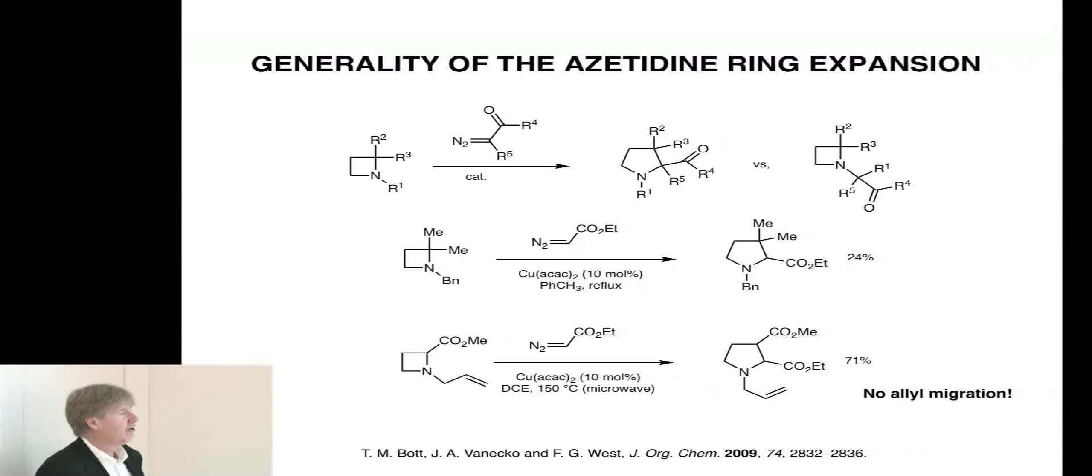Now, here, we've completely taken out any sort of conjugating group to stabilize the migrating center. We just have a pair of alkyl groups on here. This reaction didn't go in very good chemical yield, but the only isolable product came from ring expansion. The benzyl group did not migrate, just this tertiary carbon.